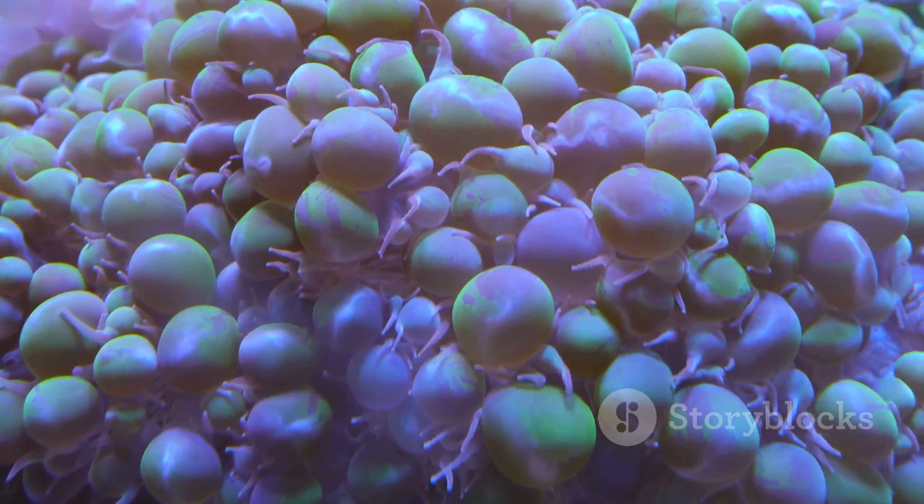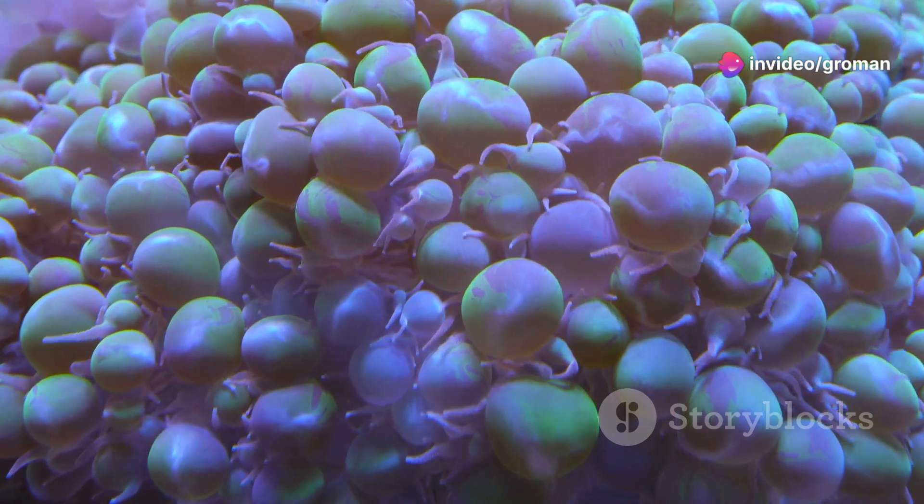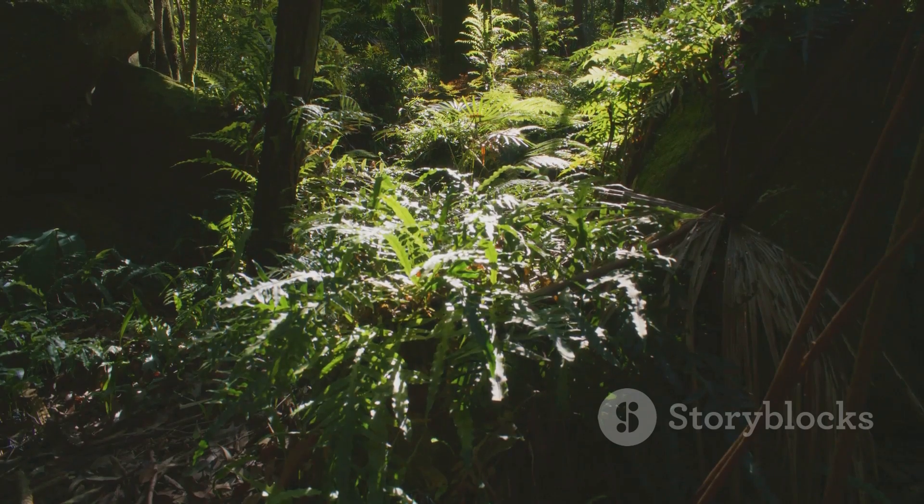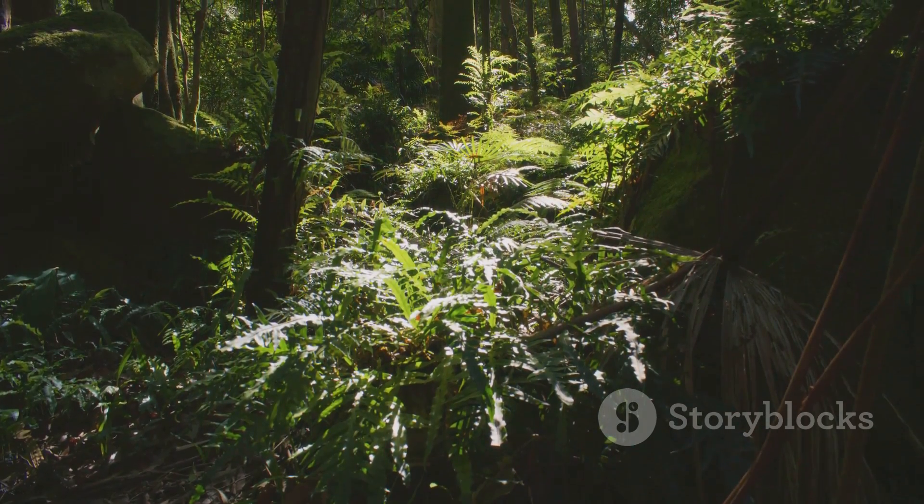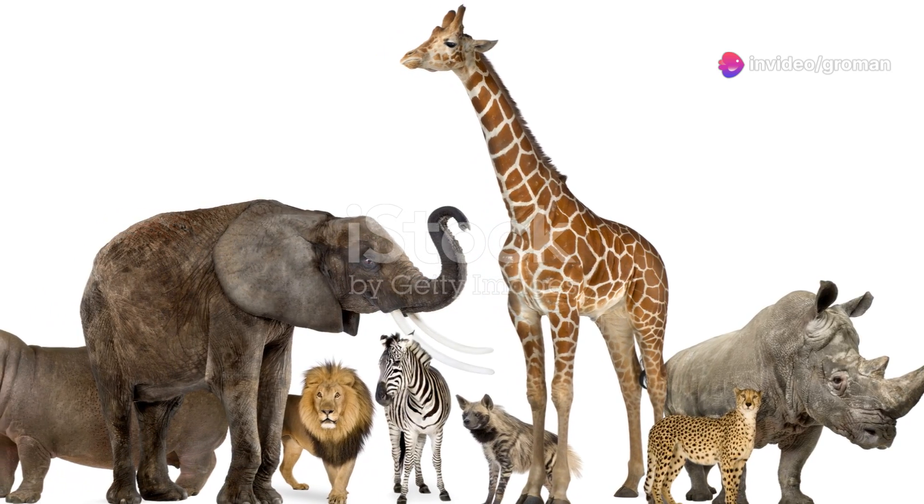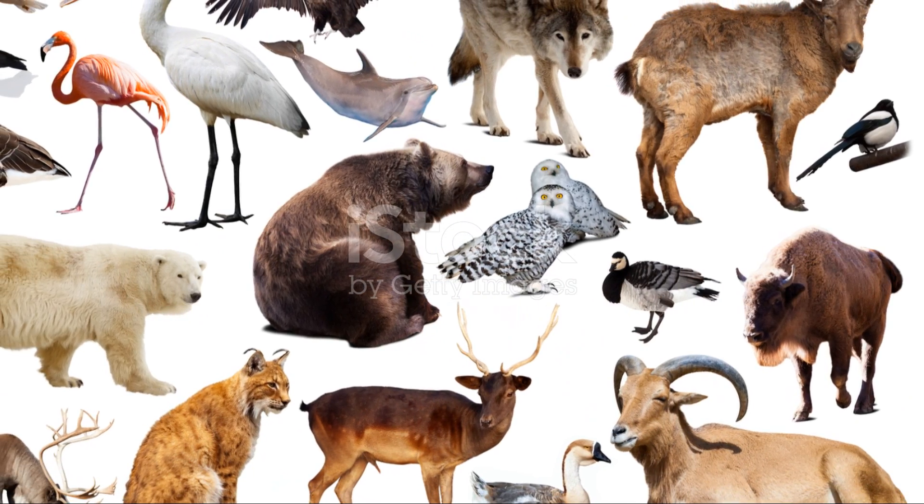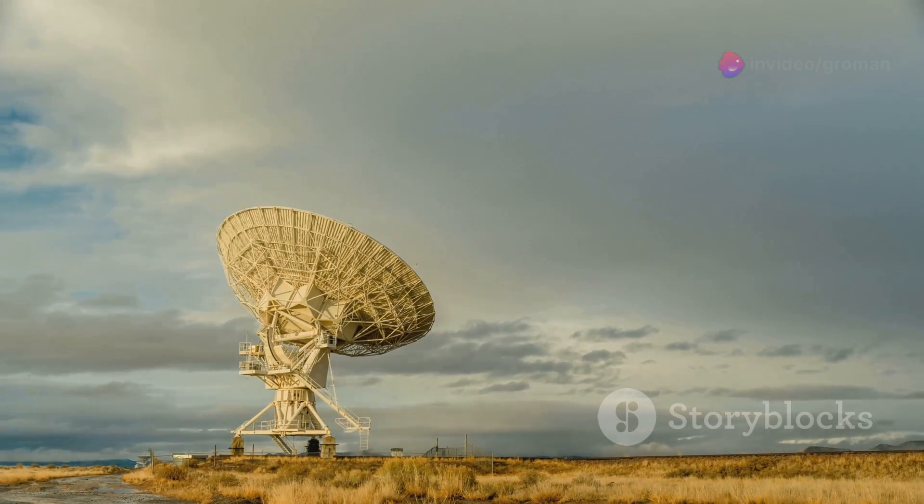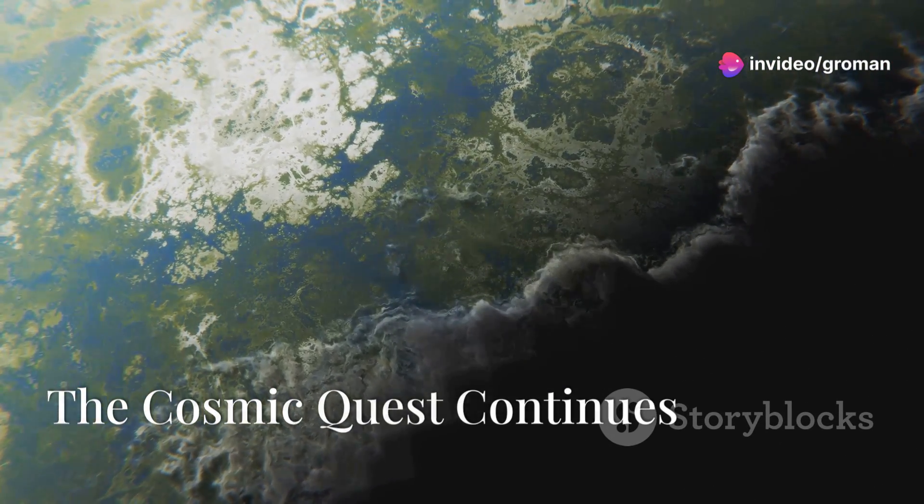It took billions of years for the first photosynthetic organisms to evolve, pumping oxygen into the atmosphere and paving the way for more complex life forms. And it took billions more years for life to diversify into the incredible array of forms we see today, from the towering redwoods to the microscopic bacteria that inhabit our gut. Evolution is a slow and painstaking process, but it's also incredibly powerful, capable of producing life forms of astonishing complexity and diversity. When we search for life beyond Earth, we need to be patient.